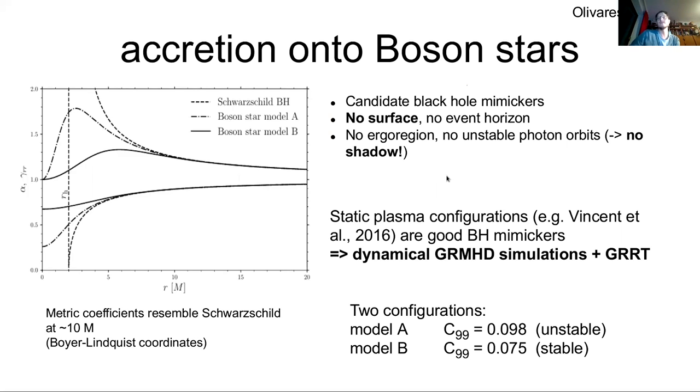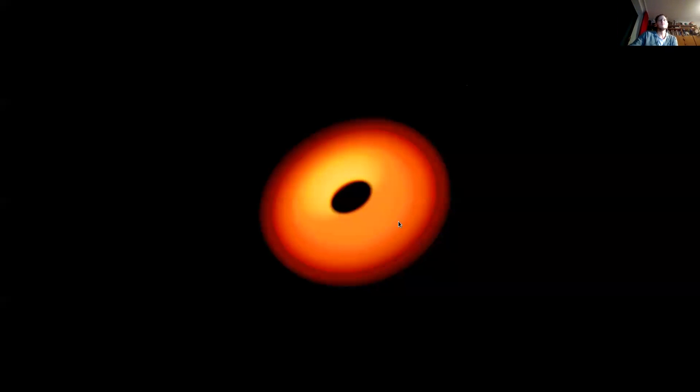And they don't have an ergoregion. They don't have unstable photon orbit. So they actually even don't have a shadow. So they should really look quite different to black holes. And this is really the case. So it's a fun project to do. And really, if you want to understand, are we really looking at black holes? You should consider at least some alternatives, so that you get some confidence in what you're looking at.